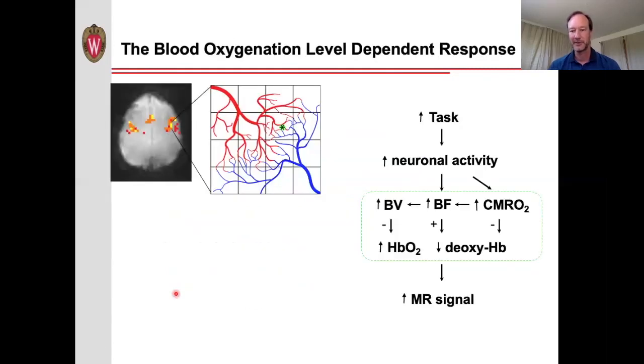In summary, we can detect increases in the MRI signal when a person starts performing a task, and importantly, this is due to the decrease in the amount of deoxygenated blood.